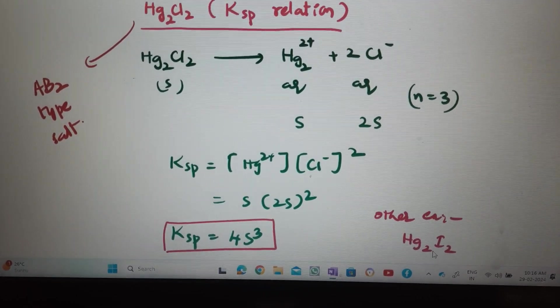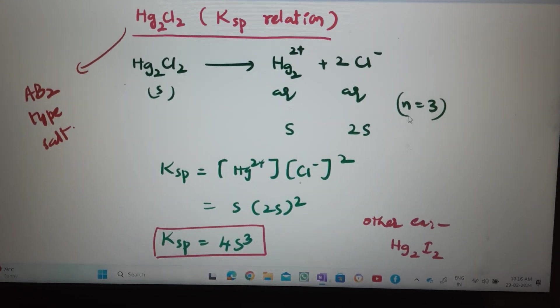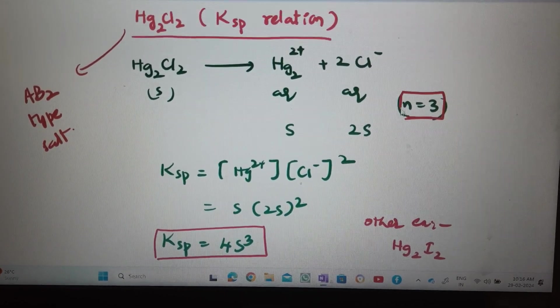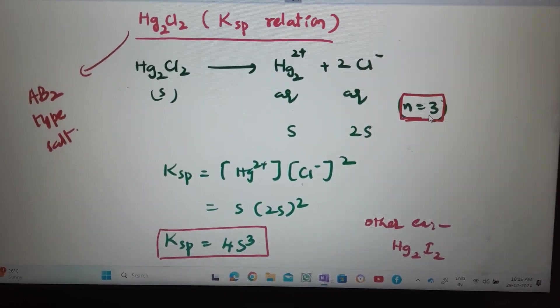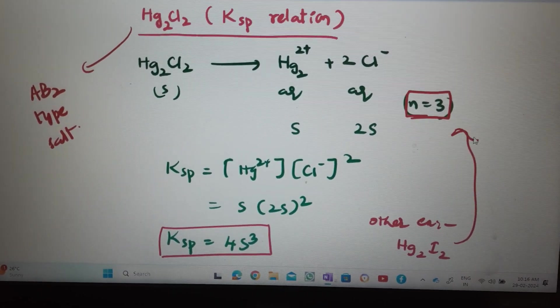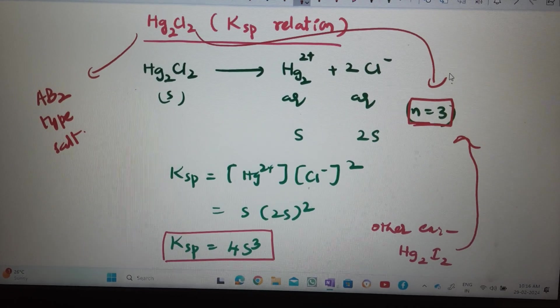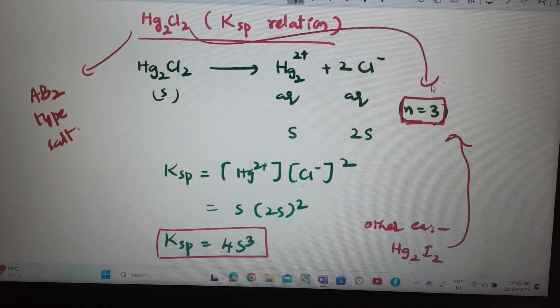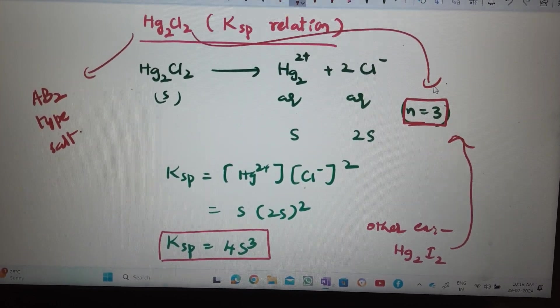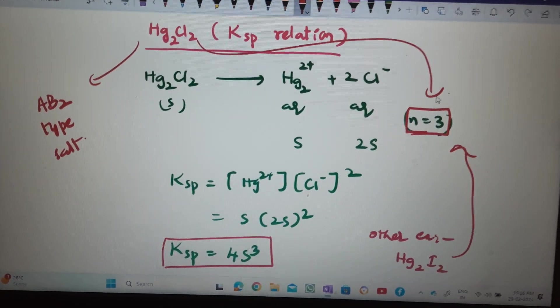Now, while finding Van't Hoff factor also, useful one. N value 3 for Hg2I2 as well as Hg2Cl2. 3 ions are appearing. While finding Van't Hoff factor also, it is useful. If you have a question, it is useful. So, let's see. Thank you.